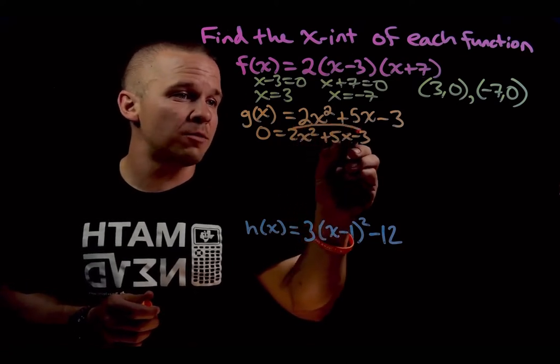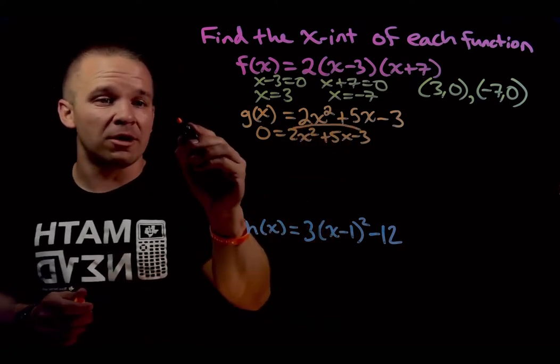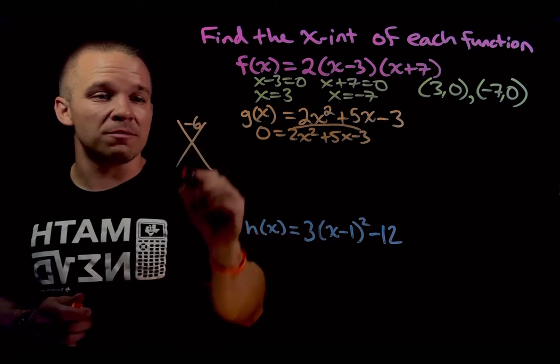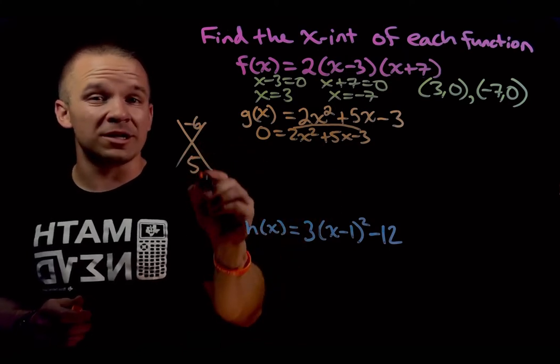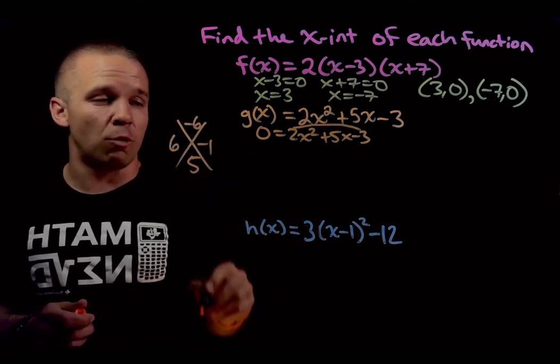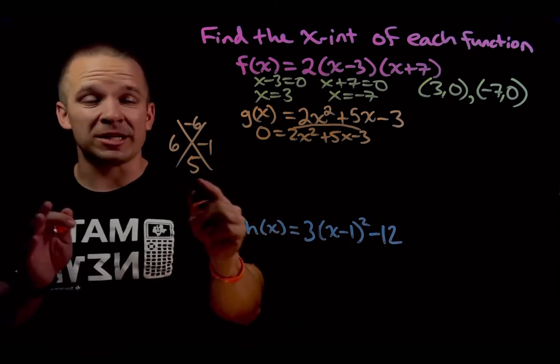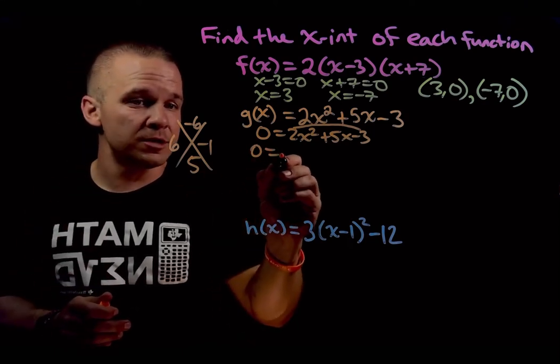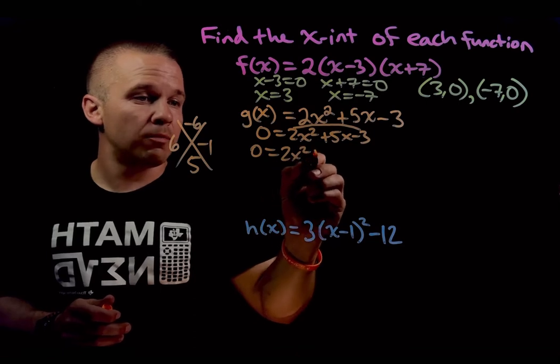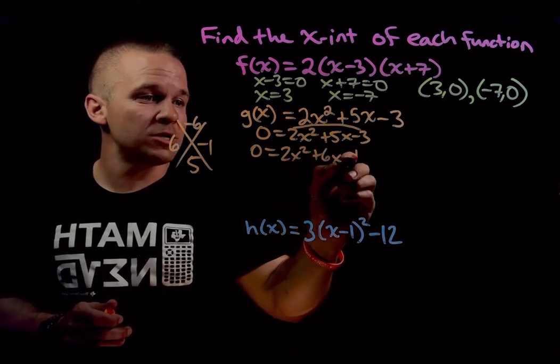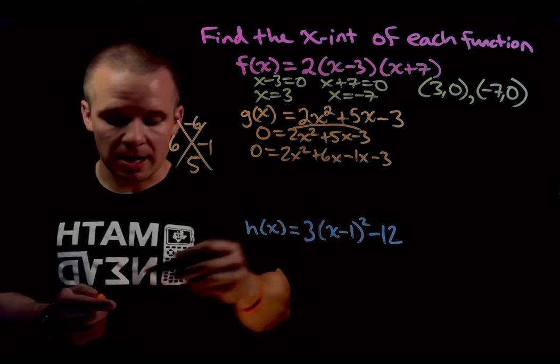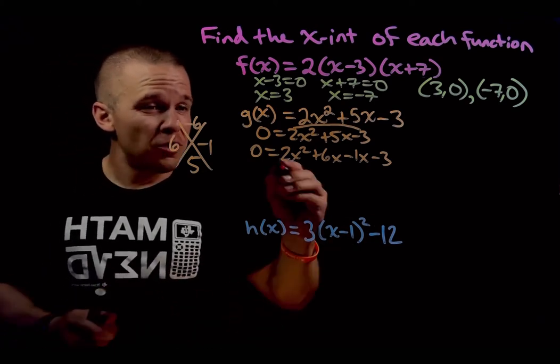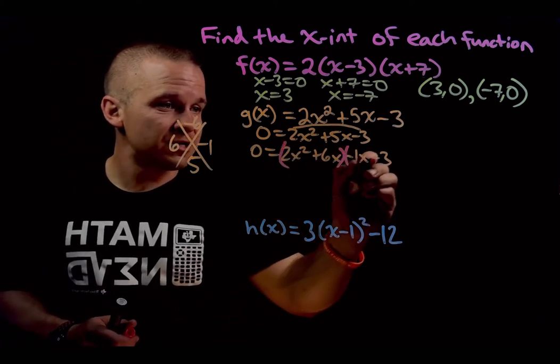We do what's called rainbow method where I'm going to multiply those two together. I got negative six from that. I got to add to five. What's going to do that? Positive six and negative one. Now what I can do is I can break this apart with a factor by grouping. So I'm going to have zero equals two x squared plus six x minus one x minus three. And I'm going to take the first two and group them, the last two and group them.